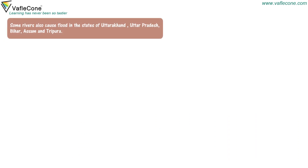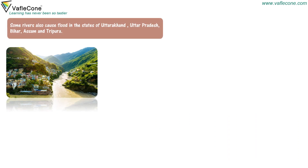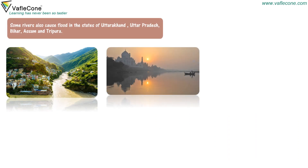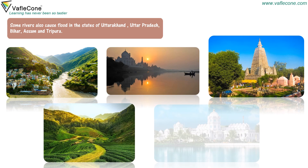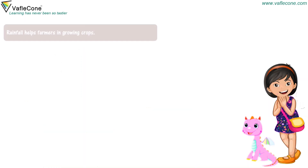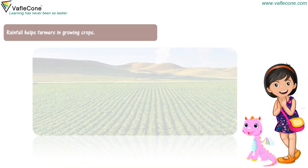Some rivers also cause floods in the states of Uttarakhand, Uttar Pradesh, Bihar, Assam, and Tripura. Rainfall helps farmers in growing crops.